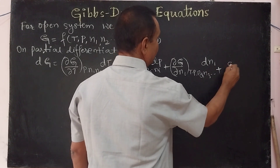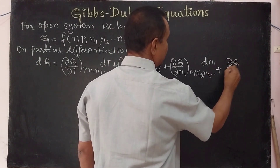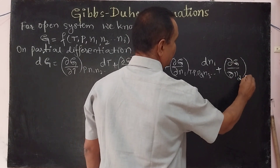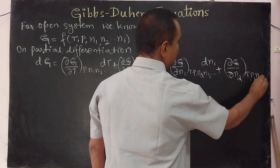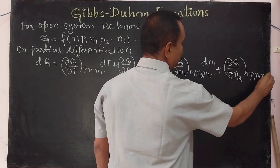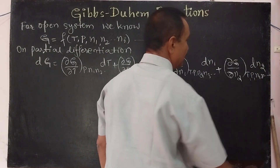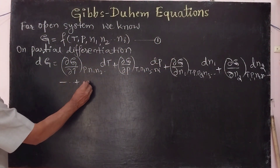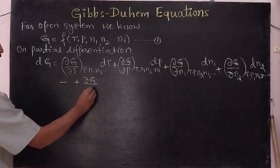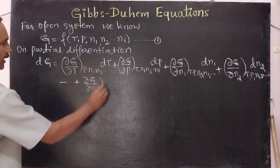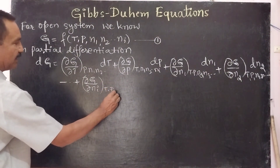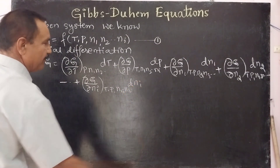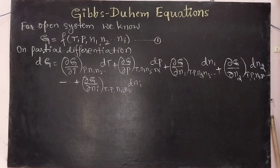Similarly, differentiation of G with respect to another component N2, at constant temperature, pressure, N1, N3, and so on, gives (∂G/∂N2) times dN2, and so on. We get the differentiation of G with respect to the i-th component, that is (∂G/∂Ni) at constant temperature, pressure, N1, N2, etc., times dNi.